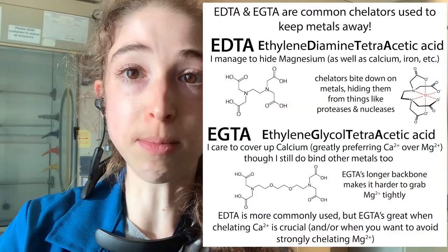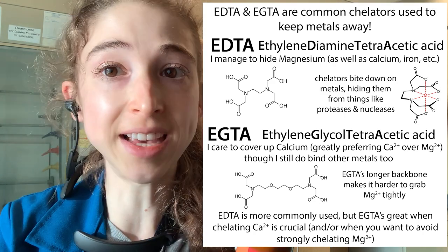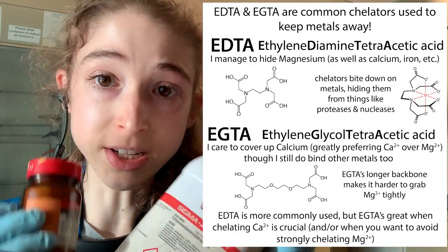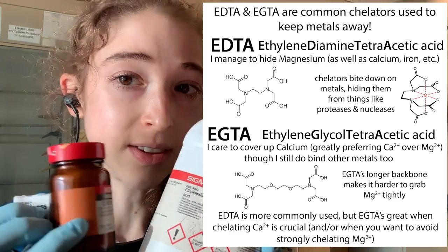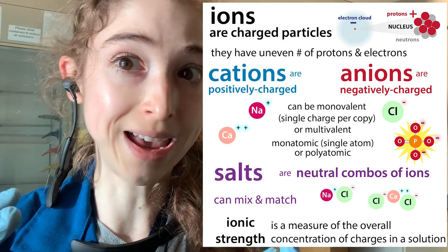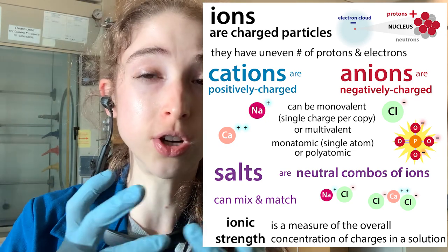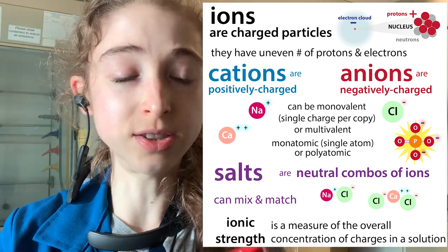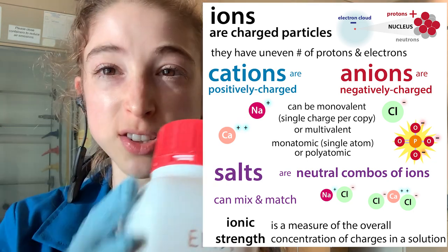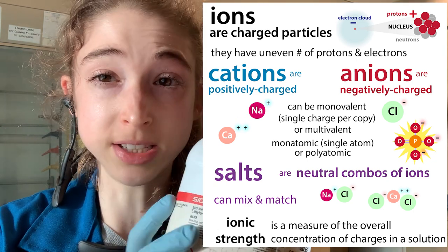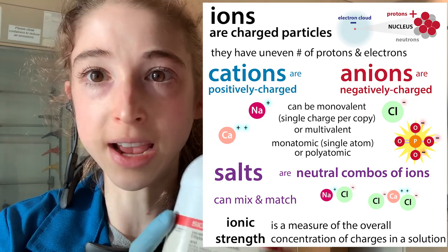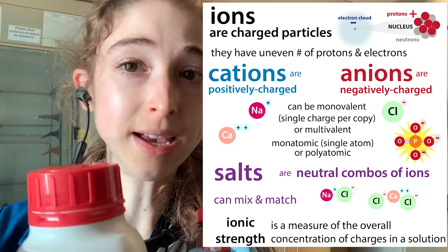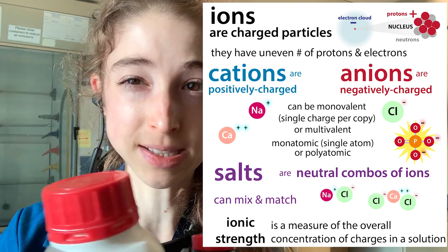In other cases, we might add or use EGTA instead of just EDTA, and both of these have various uses in the lab. Both calcium and magnesium hang out as divalent cations — positively charged particles with a charge of plus two. EDTA can also handle some trivalent cations, such as complex iron cations. But typically when we're thinking about magnesium and calcium, these are going to be in that divalent two-plus state.